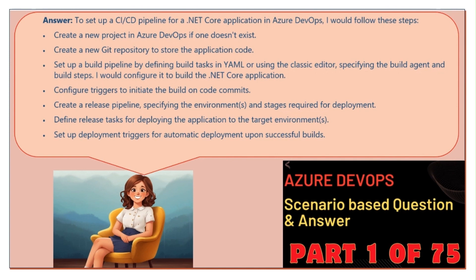Create a new project in Azure DevOps if one doesn't exist. Create a new Git repository to store the application code. Set up a build pipeline by defining build tasks in YAML or using the classic editor, specifying the build agent and build steps. Configure it to build the .NET Core application. Configure triggers to initiate the build on code commits.